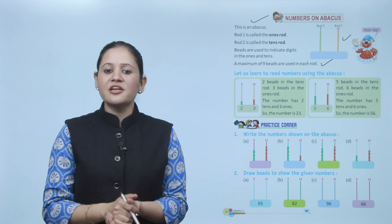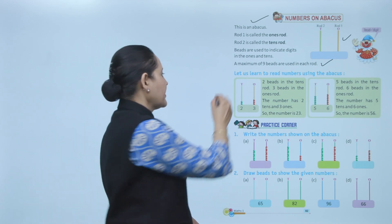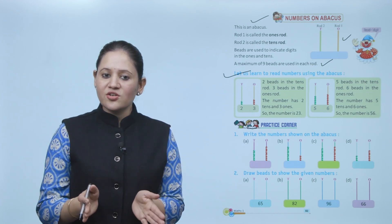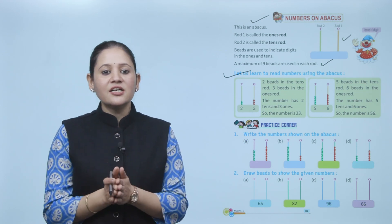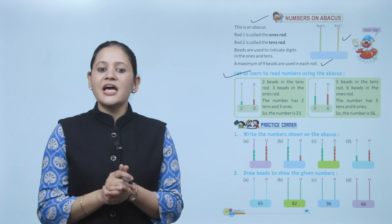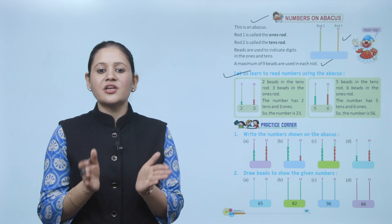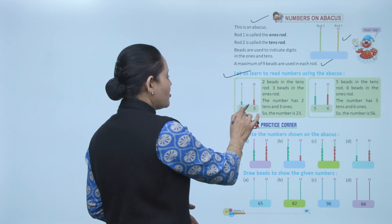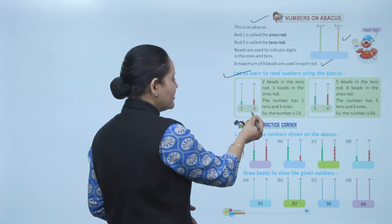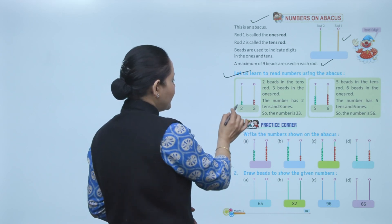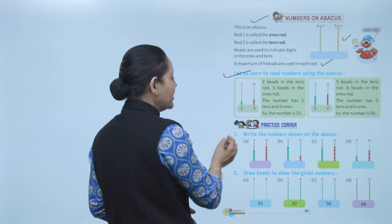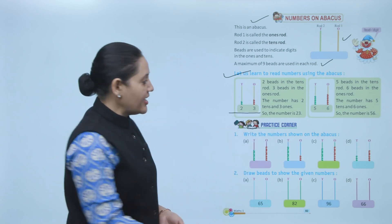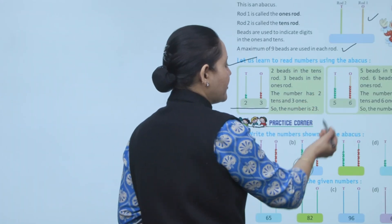Let us learn to read a number using the abacus. Here, 2 beads in the tens rod and 3 beads in the ones rod. The number has 2 tens and 3 ones — so the number is 23. In the ones rod, 3 beads, so write 3. In the tens rod, 2 beads, so write 2. That makes 23. Similarly, ones place 6, tens place 5 gives number 56.